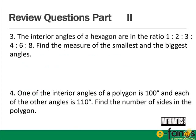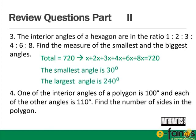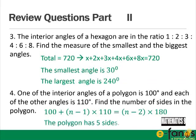Part 2: The interior angles of a hexagon are in the ratio 1:2:3:4:6:8. Find the smallest and biggest angles. Answer: total is 720°, so x + 2x + 3x + 4x + 6x + 8x = 720; the smallest angle is 30° and the largest is 240°. Part 4: One interior angle of a polygon is 100° and each other angle is 110°. Solution: 100 + (n − 1) × 110 = (n − 2) × 180 gives n = 5.